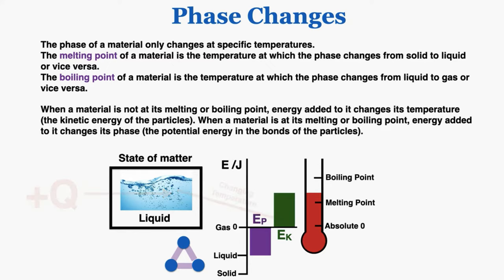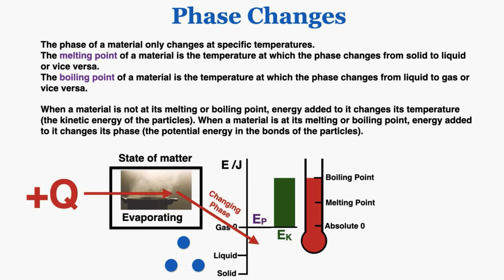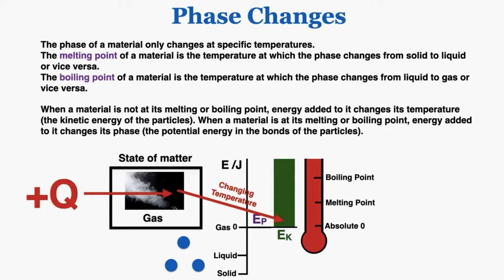Once it's finished changing phase and is completely in its new phase, all the energy adds kinetic energy and increases the temperature until the temperature reaches the boiling point. At the boiling point, the material changes phase instead of temperature again — this time the material is vaporizing. The energy is now being used to cancel out the negative potential energy and remove the last of the bonds between particles until there are no bonds left. When that happens, the material has completely changed into a gas, and any additional energy added will increase its kinetic energy and temperature, since there's no other phase for it to change into.